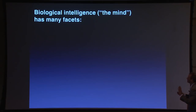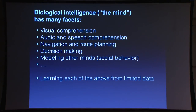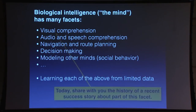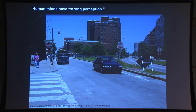Intelligence has many facets: how we visually comprehend the world, audio and speech comprehension, navigation and route planning, decision-making, modeling other minds as the basis of social behavior, and learning from limited data. These are things our biological system does quite well yet have been challenging for artificial systems. I'll highlight some of them at the end, but first I want to tell a story of a recent success in just one of these facets to give you a sense of what's happened in the last decade.